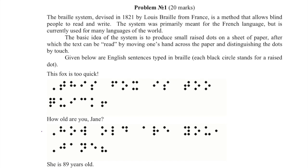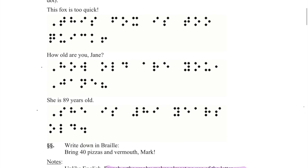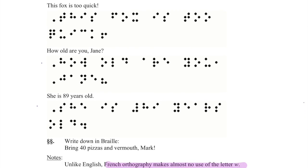The sentences are: this fox is too quick, how old are you Jane, and she is 89 years old. The question asks us to write down in Braille: bring 40 pizzas and vermouth, Mark.